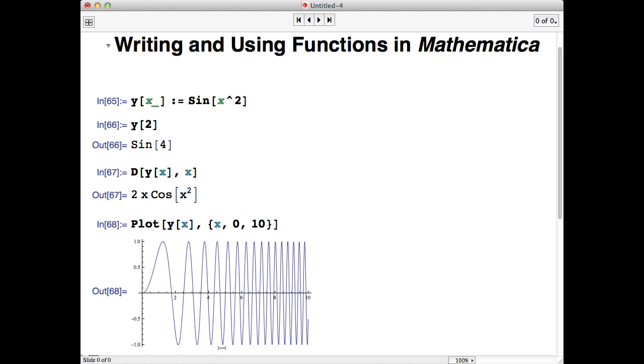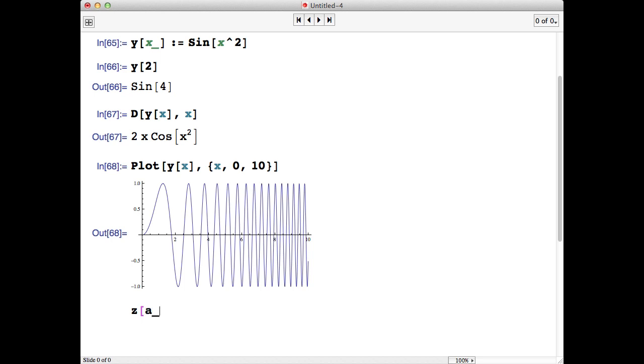Oh, there's one last thing. If you wanted to define a multivariable function, it's as simple as separating the variables with commas. Let's say we wanted a function z of a and b, and specifically we want a function of sine of a and cosine of b.